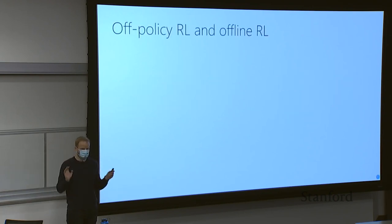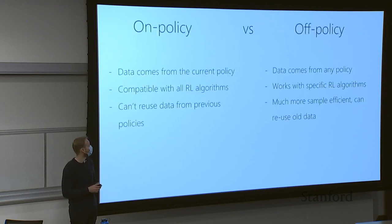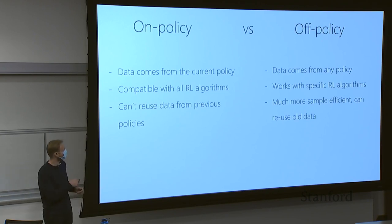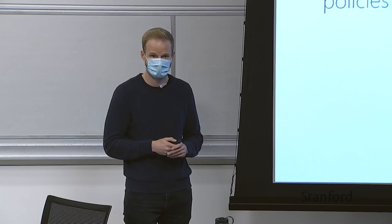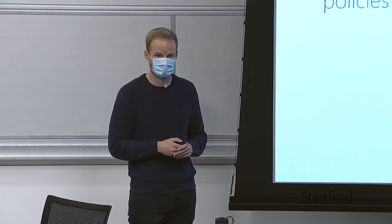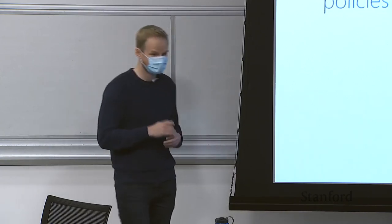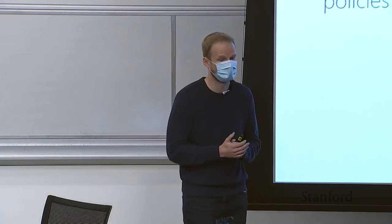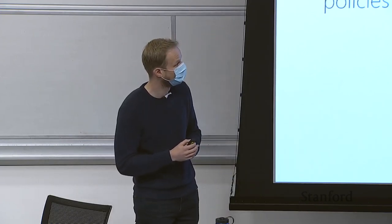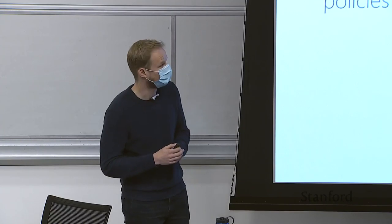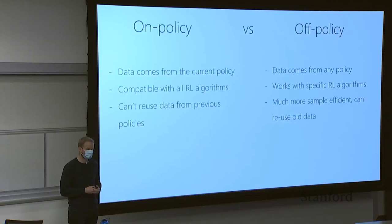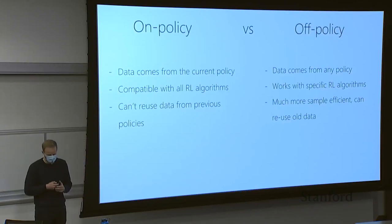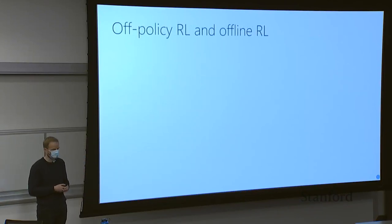Given these two options, we would use the off-policy case for offline RL — data can come from any policy rather than needing to come from a specific policy. So we'll be using off-policy RL.